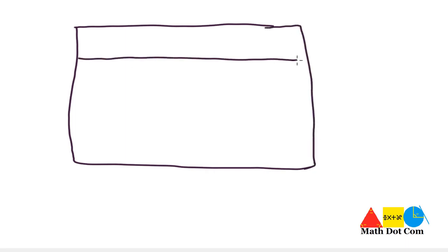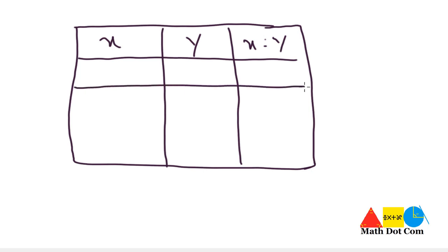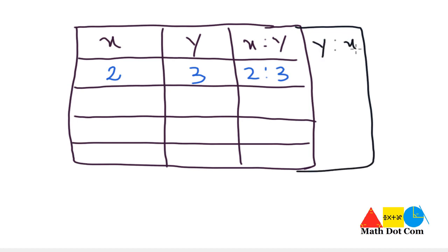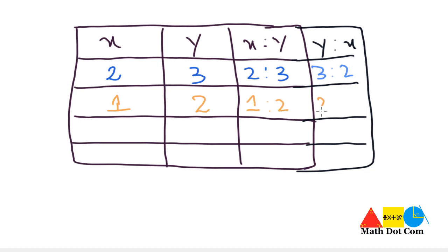Let's find multiple ratios to understand the concept clearly. If x = 2 and y = 3, then x ratio y is 2 ratio 3, and y ratio x is 3 ratio 2. If x = 1 and y = 2, then x ratio y is 1 ratio 2, and y ratio x is 2 ratio 1 — meaning for every one value of x, y has double the value.